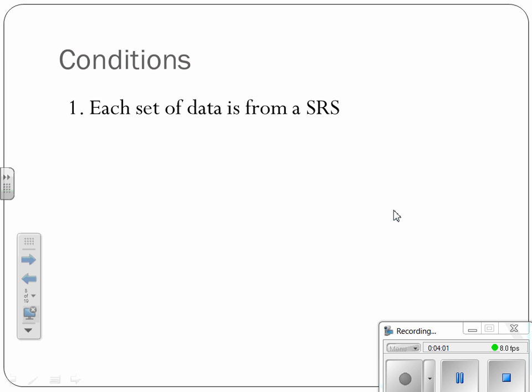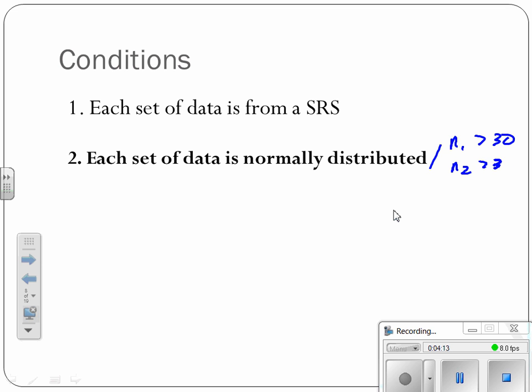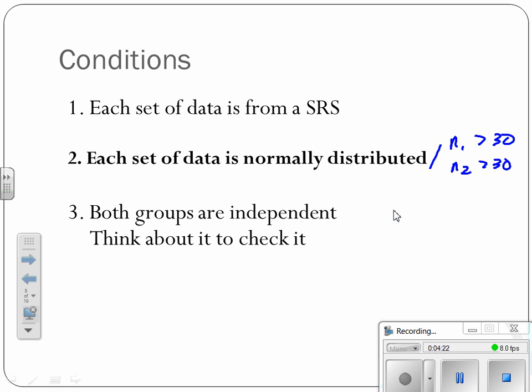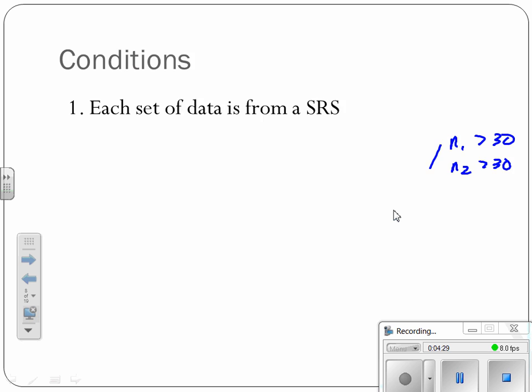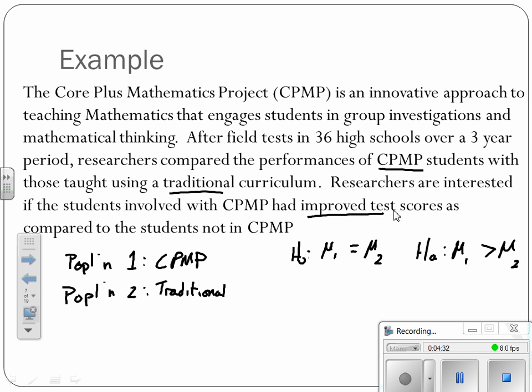So here are the new conditions or slightly altered conditions. Because we have two sets of data, we need each of them to come from an SRS. Because there are two sets of data, we need each to be normally distributed or that N1 is greater than 30 and N2 is greater than 30. So either they're both from a normal distribution or they're both big enough. And then finally, that both groups are independent of each other. We just want to make sure that there's not an overlap. So really, it's a matter of kind of thinking through the process to think, does one group affect the other group? We think back here, the common core versus the traditional. One curriculum is not going to affect the other. Those are independent. The hot dogs. A meat hot dog isn't going to affect an all-beef hot dog.